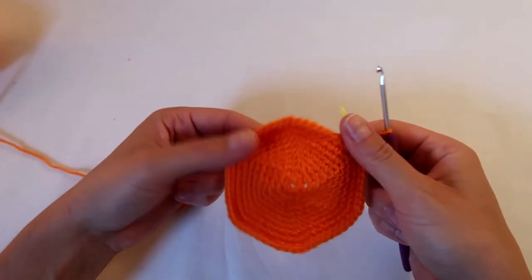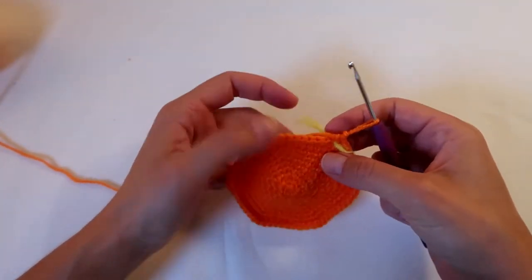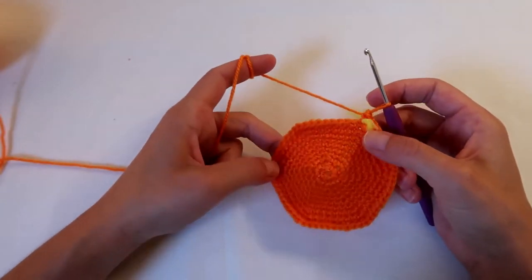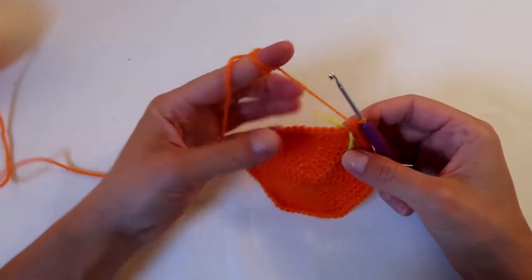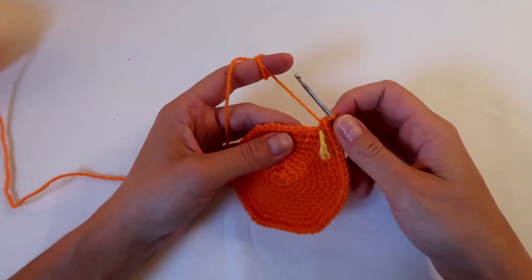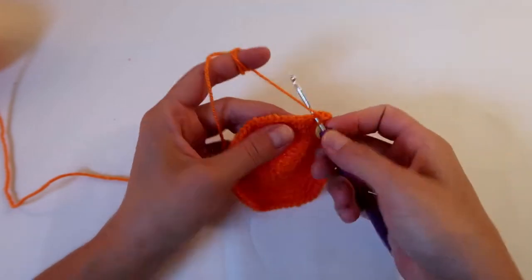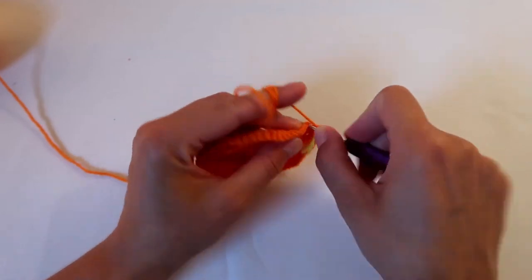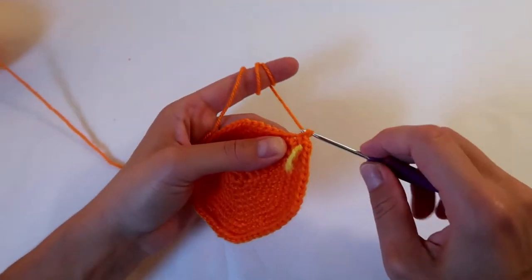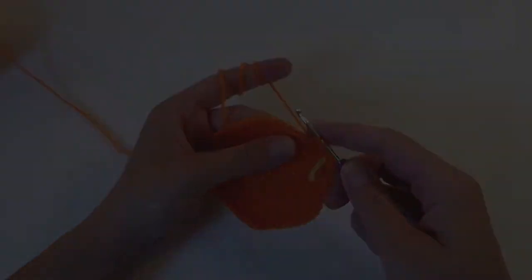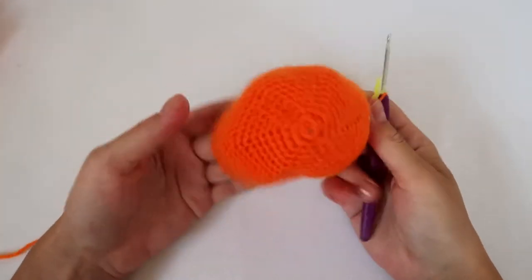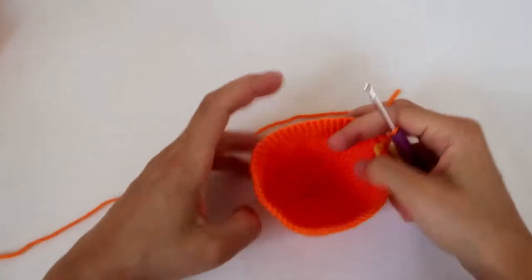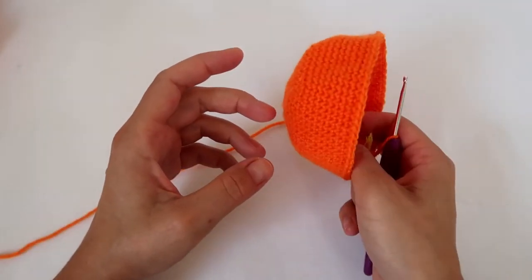Okay, so now I've done 10 rows, and now I'm going to do 1 double crochet in each stitch, so no increase anymore. That's what it looks like so far.